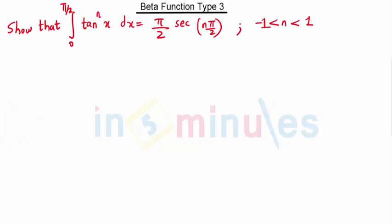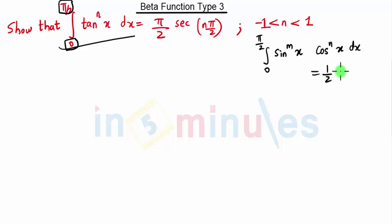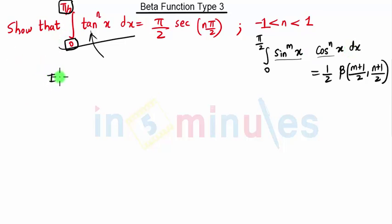Now we will see the first question — we have to show that a given integration equals a specific term. The integration is from 0 to π/2, which is of the form: integral of sin^m(x) · cos^n(x) dx = (1/2) · β((m+1)/2, (n+1)/2). We need to match our expression to a sine and cosine form, so let I equal the given integral.